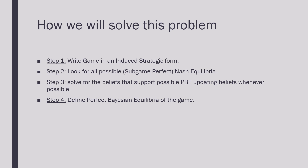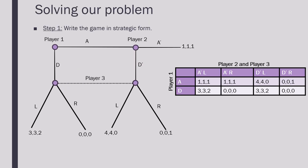We have the following four steps that we're going to follow: we're going to write this game in an induced strategic form, look for all possible subgame perfect Nash equilibria, solve for the beliefs that support possible perfect Bayesian equilibria updating them whenever possible, and lastly define the Bayesian equilibrium of this game.